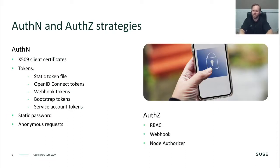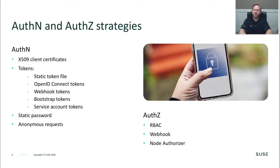Two things have really evolved: authentication and authorization. In terms of AuthN — authentication — you typically have client certificates or SSL, some type of token, whether it be a static token, an OpenID Connect token, webhook tokens, bootstrap tokens, or service account tokens. These are very common amongst Kubernetes itself. You could also have a static password or anonymous requests. In AuthZ terms, there are a few strategies: RBAC (role-based access control), ABAC (attribute-based access control), webhooks, and node authorization.